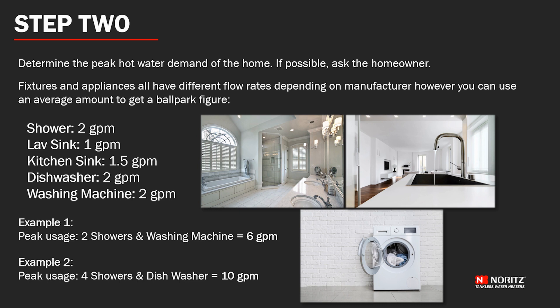Example 1 shows a fairly average use of two showers and a washing machine at the same time, totaling 6 gallons per minute. While example 2 shows a rather large peak demand of 4 showers and a dishwasher, totaling 10 gallons per minute.